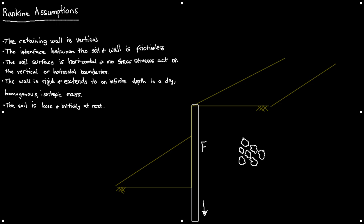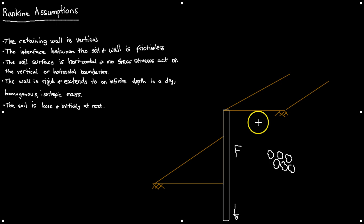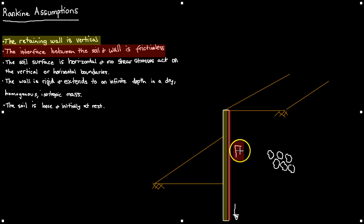I have drawn my diagram when this question comes up in the exam. Now I just say what I see. The retaining wall is vertical. First one. Bingo. Now, the interface between the soil and wall is frictionless. How do I get this? Well, I have drawn the F here next to the retaining wall and it is prompting me that I am talking about friction and the interface between the soil and wall. That is how I get this from this diagram.